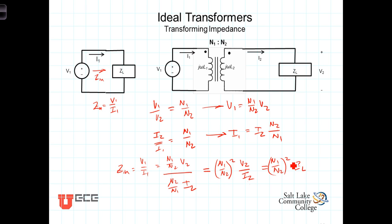What that would mean, then, is that V1 will be greater than V2, and the current I1 will be less than the current I2.